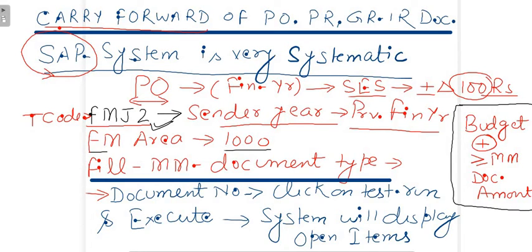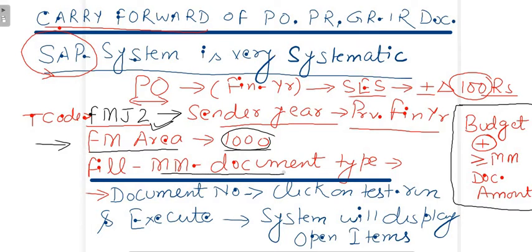To execute FMJ2, fill in the FM area — for example 1000, or whatever FM area is defined in your company. FM means Fund Management area. Then fill the sender financial year — the year from which you want to transfer the MM document. For example, if the previous financial year is 2021, enter 2021 in the sender financial year field. In the document type field, fill the document type — for a purchase order it may be 51 or 50, for a purchase requisition fill that type, and for GRIR fill the GRIR document type. Then fill in the document number.